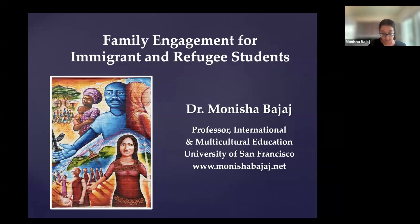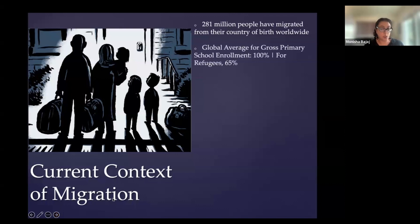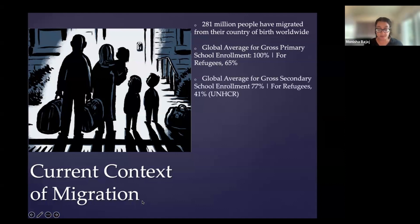To give us some context and get us all on the same page, when we think about the global context of migration, about 281 million people have migrated from their country of birth worldwide. The global average for gross primary school enrollment is 100% or over, but for refugees globally, that's just 65%. So you see quite a disparity there in terms of even primary school enrollment. When you look at the secondary school level, it becomes even more stark, where you have a global average gross secondary school enrollment of 77%, but for refugees, just 41%.